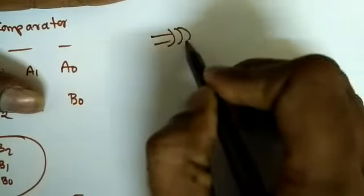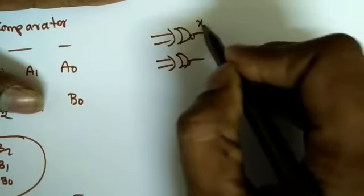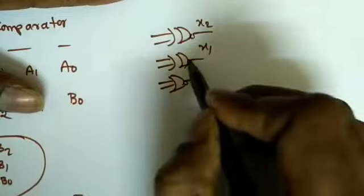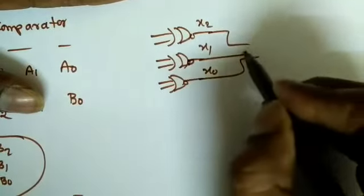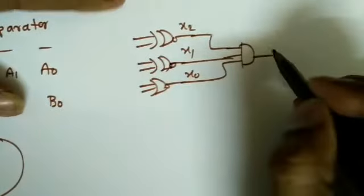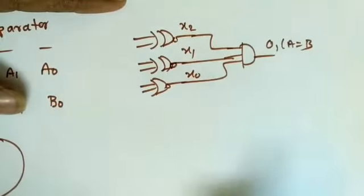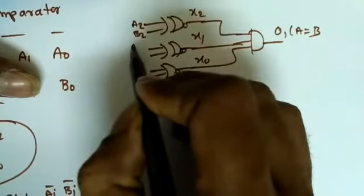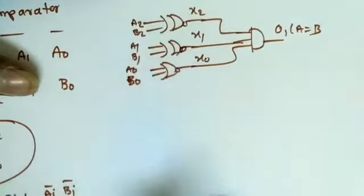For the logic diagram: three XNOR gates for X2, X1, X0 — inputs A2 B2, A1 B1, A0 B0 — all going to one AND gate to produce O1 (A equals B).